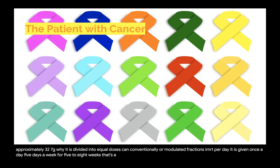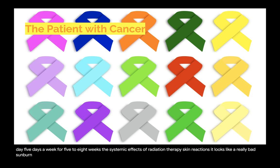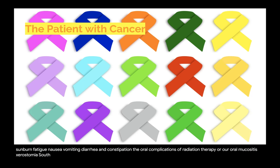The systemic effects of radiation therapy include skin reactions that look like a really bad sunburn, fatigue, nausea, vomiting, diarrhea, and constipation. The oral complications of radiation therapy are oral mucositis, xerostomia, salivary gland hypofunction, radiation caries, dysgeusia, infection — bacterial, viral, or fungal — trismus, and osteoradionecrosis.